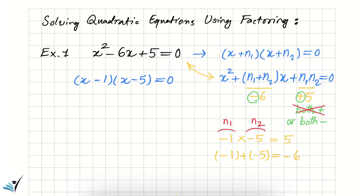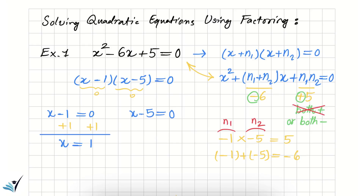Because the right-hand side is zero, each factor has to be zero. Setting x minus 1 equal to zero and adding 1 to both sides gives x equals 1. For the second root, setting x minus 5 equal to zero and adding 5 to both sides gives x equals 5. So x equals 1 and x equals 5 are the solutions, which matches exactly what we saw in the graph.